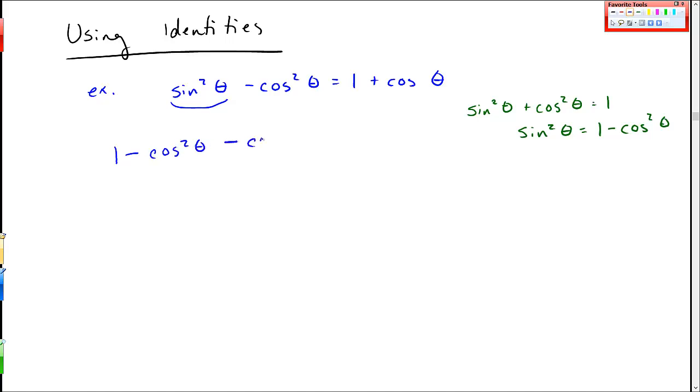1 minus cosine squared theta, then I have another minus cosine squared theta on the left. It equals 1 plus cosine theta. So I get 1 minus 2 cosine squared theta equals 1 plus cosine theta. And these ones will cancel each other out.